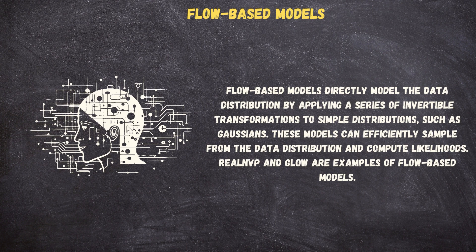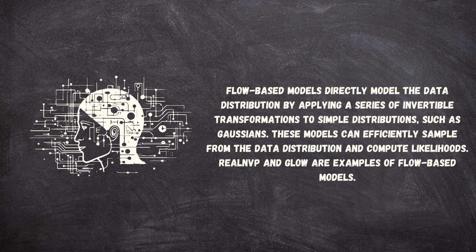Flow-based models directly model the data distribution by applying a series of invertible transformations to simple distributions, such as Gaussians. These models can efficiently sample from the data distribution and compute likelihoods. RealNVP and GLOW are examples of flow-based models.